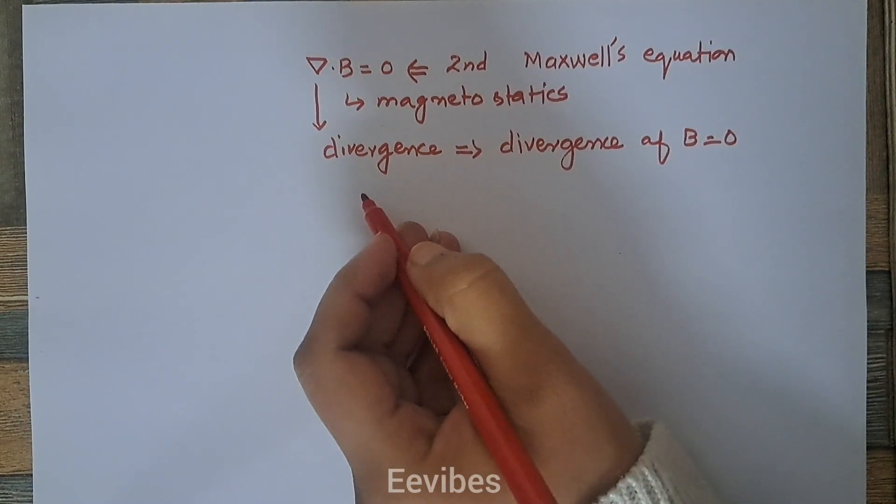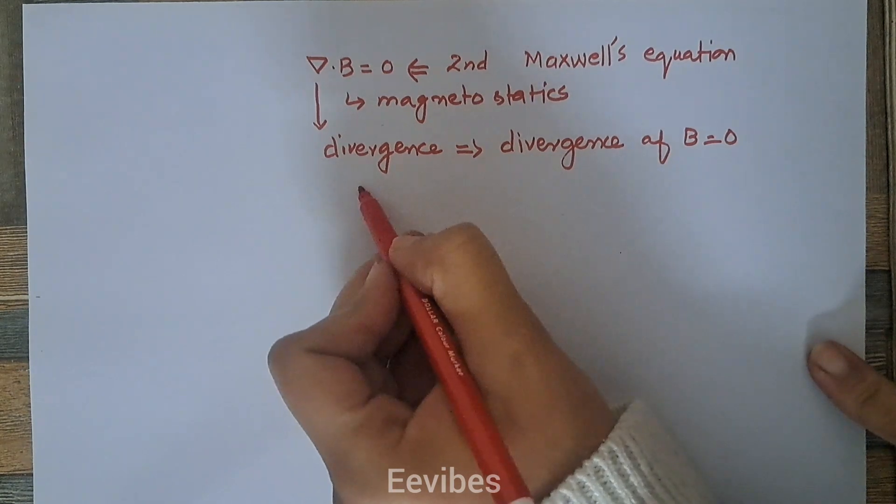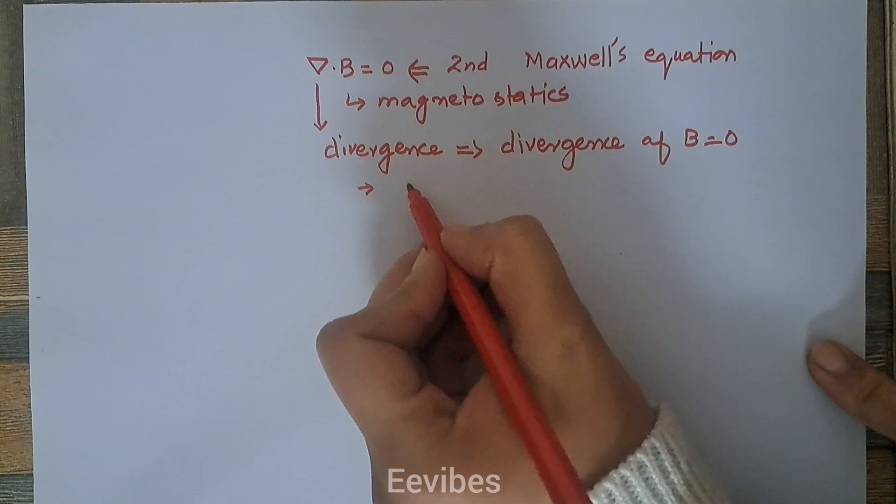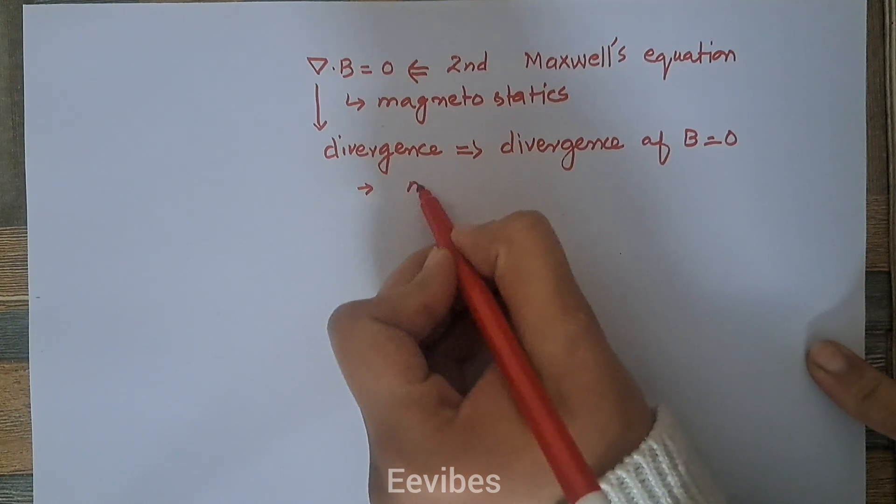What does it mean? It means that the first thing is the magnetic lines of forces are continuous, so the magnetic field is continuous.